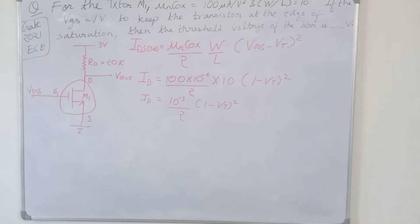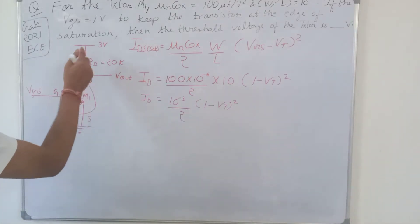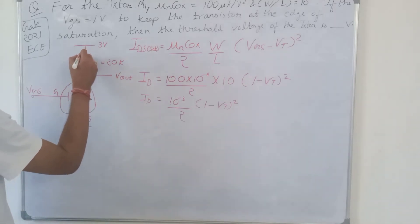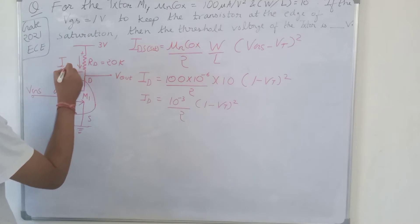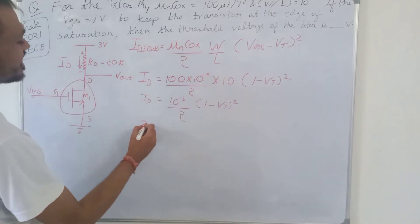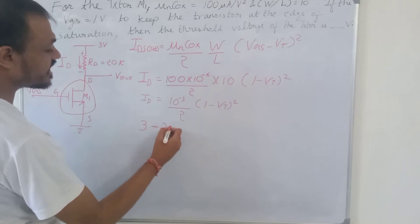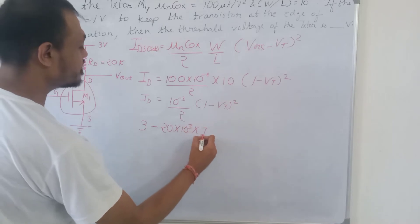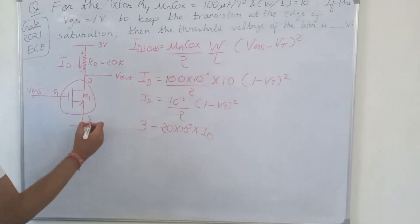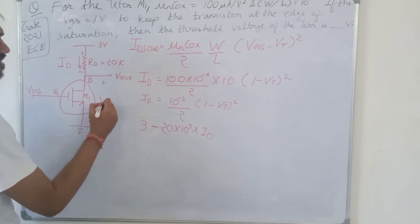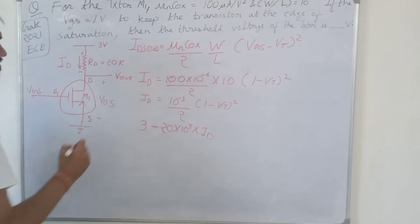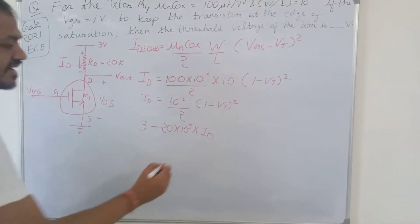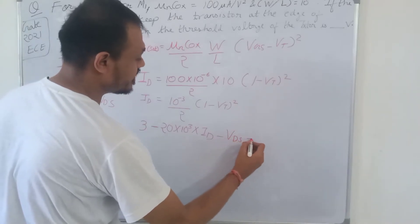Now we apply KVL. The supply is 3 volts, the drain current flows through a 20 kΩ resistor, and VDS is the drain-to-source voltage. Applying KVL: 3 − 20×10³ · ID − VDS = 0.